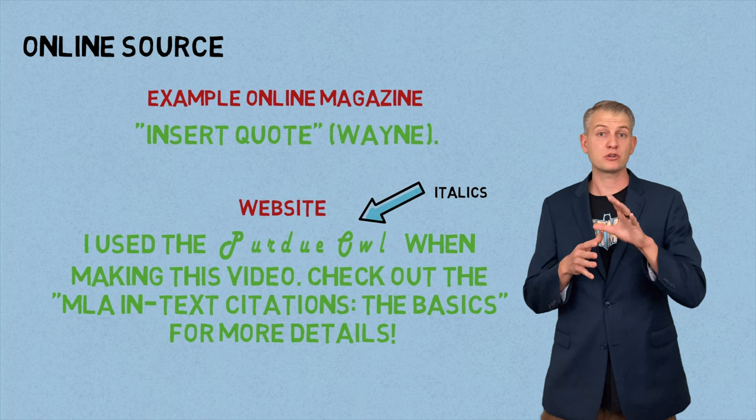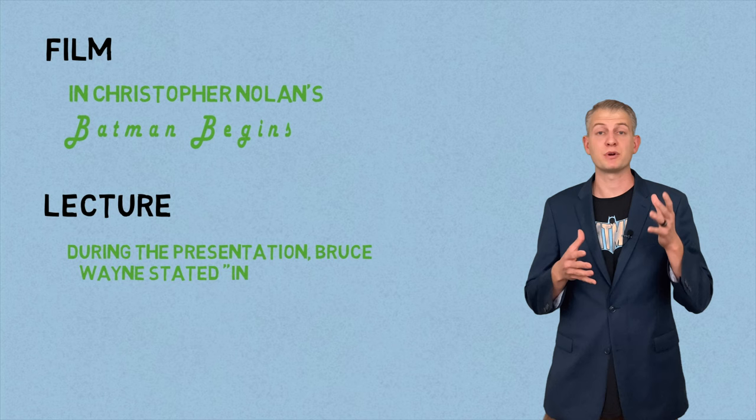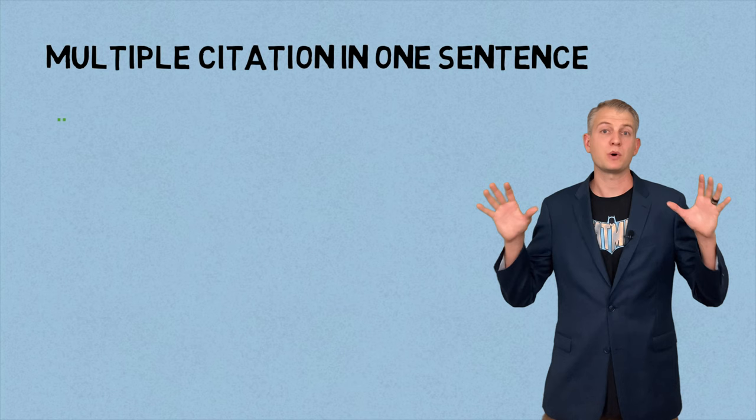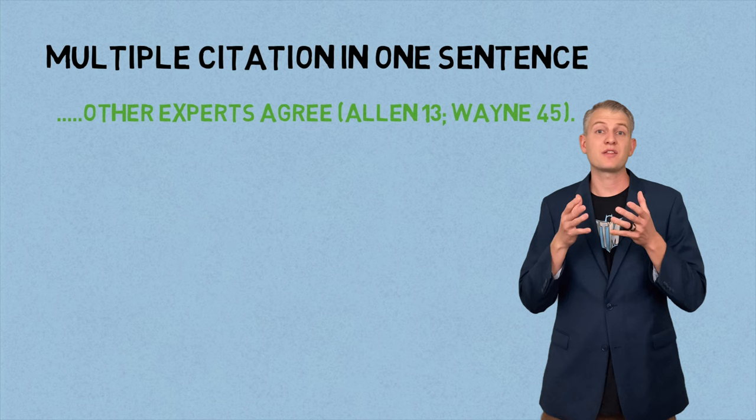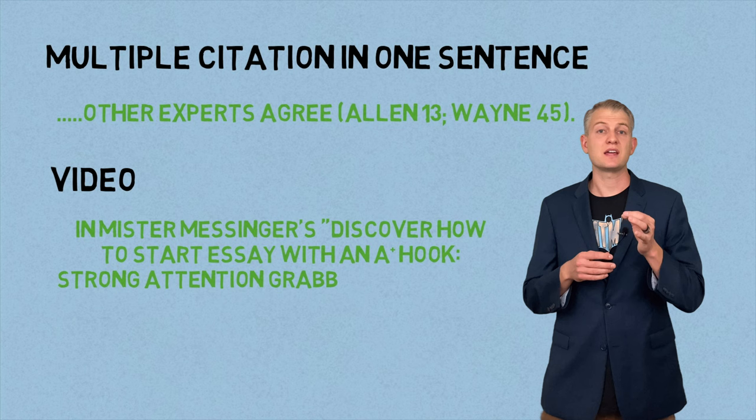When citing a film or movie, have the director's name followed by the title of the movie in italics. If you're citing a lecture, state the name of the person presenting, which should connect to your works cited. If an idea comes from multiple authors, in the parentheses have the first author's name and page number, followed by a semicolon and the second author's name and page number. For a YouTube video, state the author's name followed by the title in quotes, and in the parentheses have the timestamp where the quote comes from.